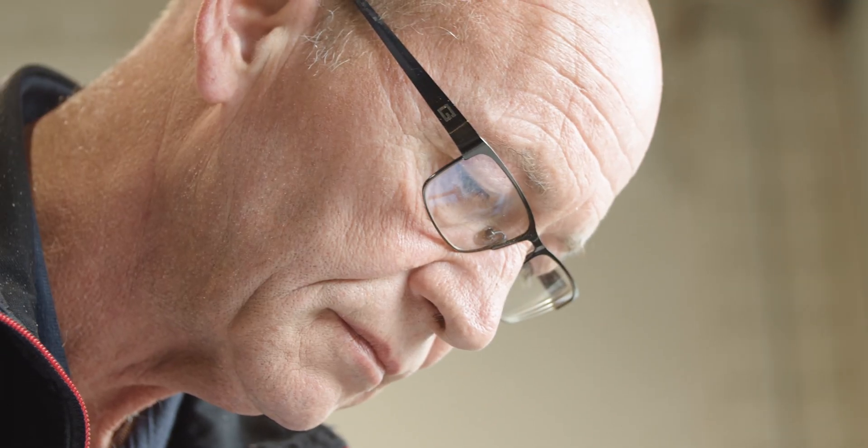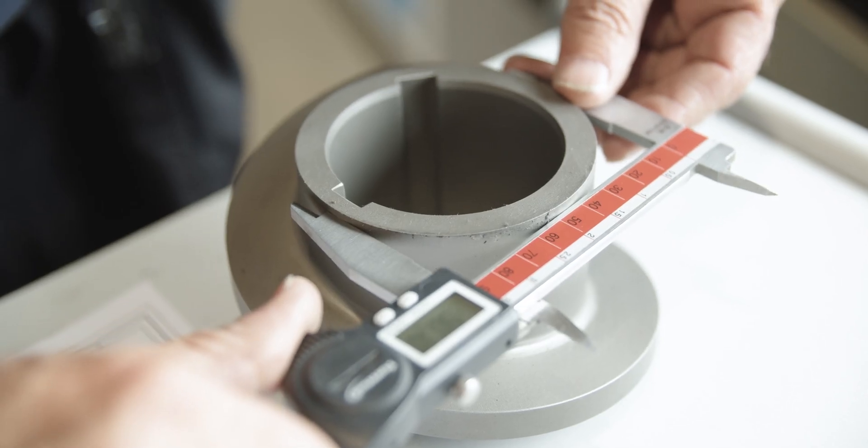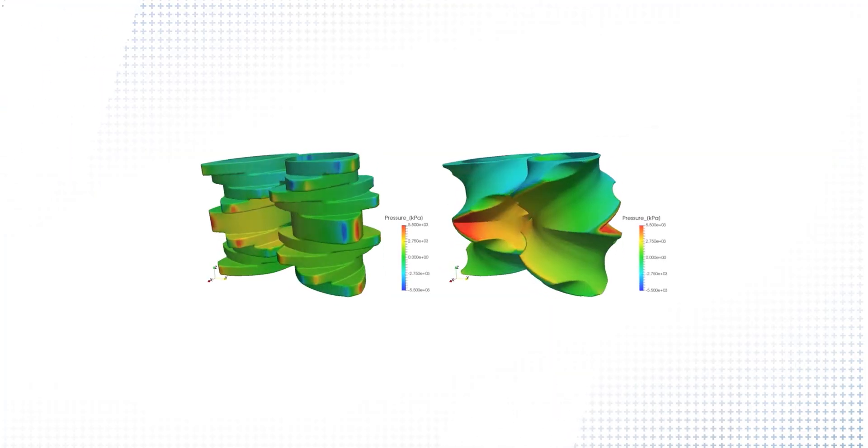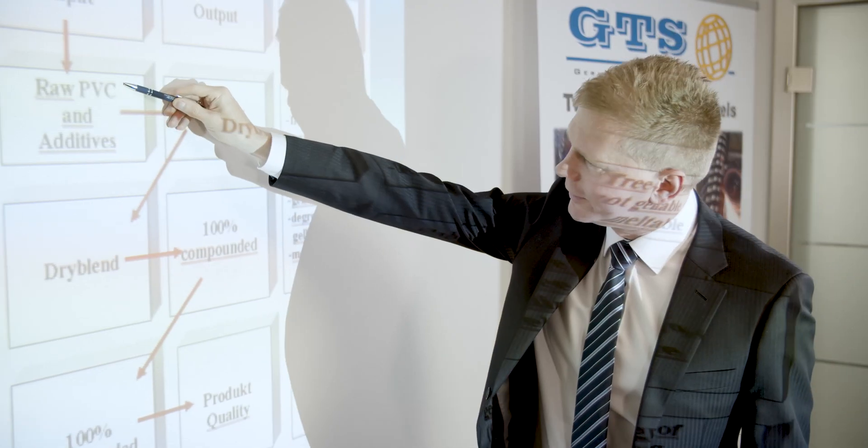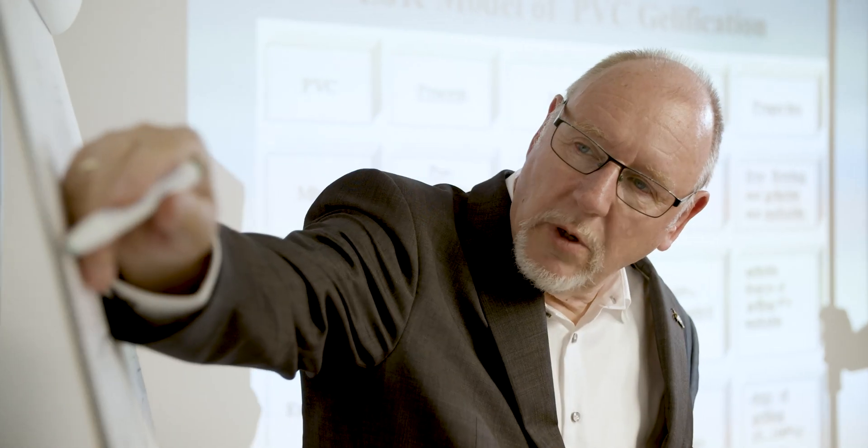For co-rotating twin screws we manufacture screw elements and barrel segments for all sizes and brands in combination with all wear protection designs. German twin screws is a highly recognized trainer for specialists all over the world.